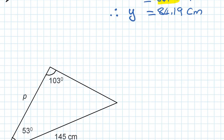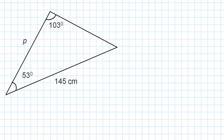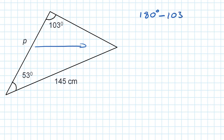Next question. This is a non-right triangle with two angles given, so we use the sine rule. We're looking for P. The angle opposite P is unknown, and we don't have both required values — two unknowns — so we can't apply the rule yet. We need to find the missing angle first. In a triangle, all angles add up to 180 degrees. So: 180 minus 103 minus 53 degrees equals 24 degrees.